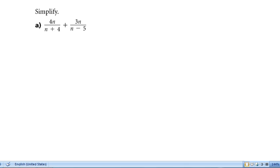So in example A, first thing we should do is state our non-permissible values of n. Notice that n cannot be negative 4 or 5. If n were these numbers, we would have a division by 0.